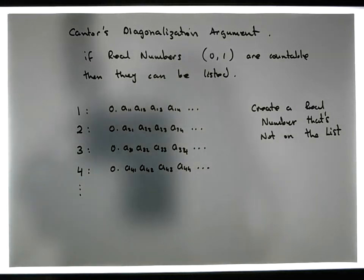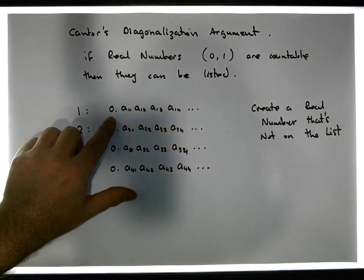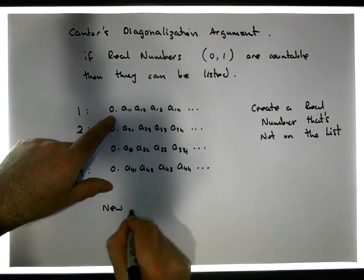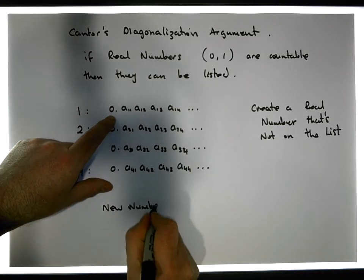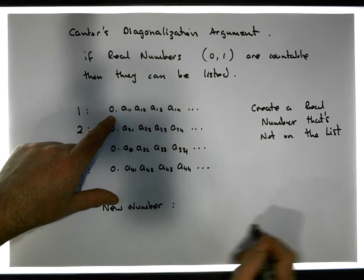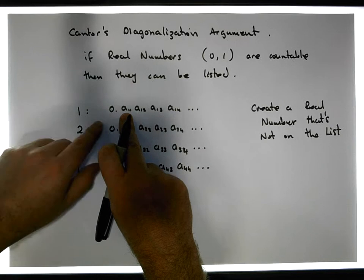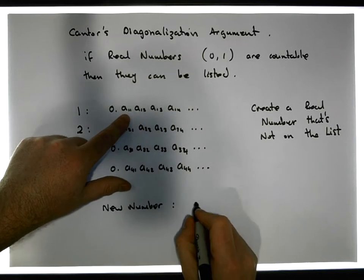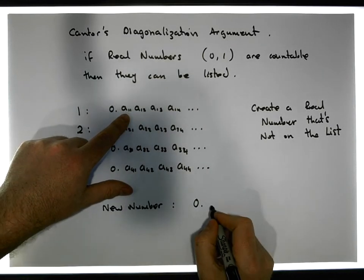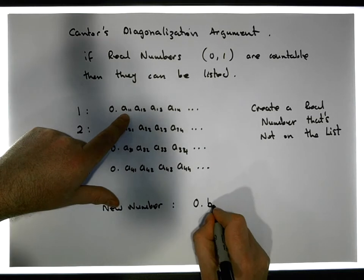So how do we create this new number? What we're going to do is we're going to start off with zero point — so the new number is going to start with zero point — and let's call the first digit B11.